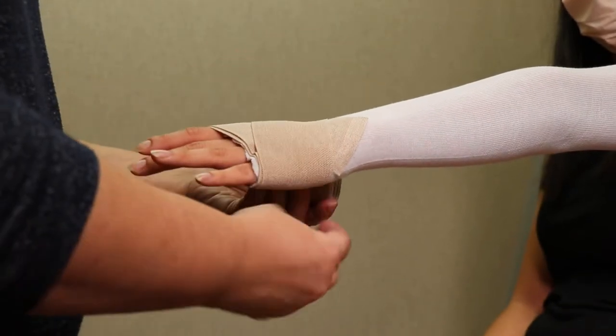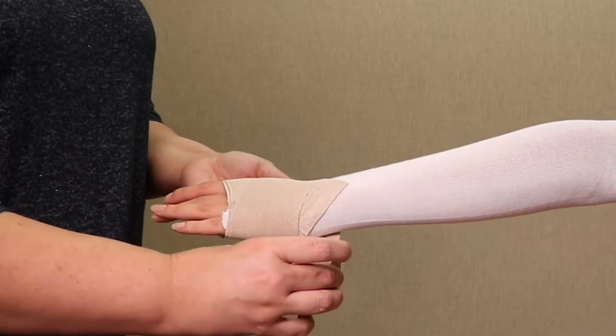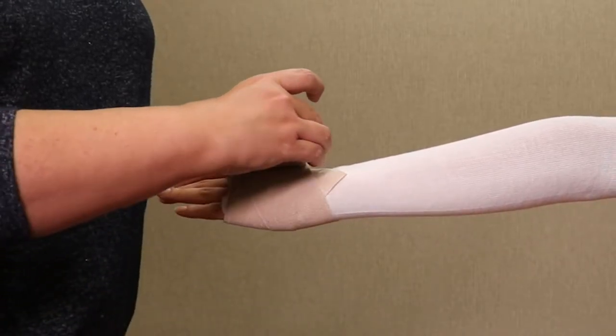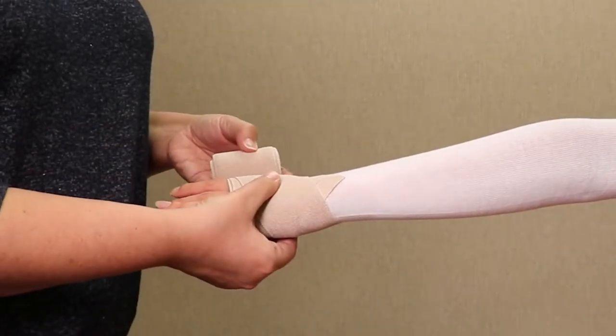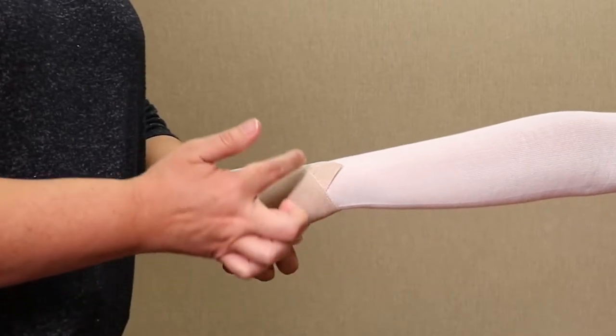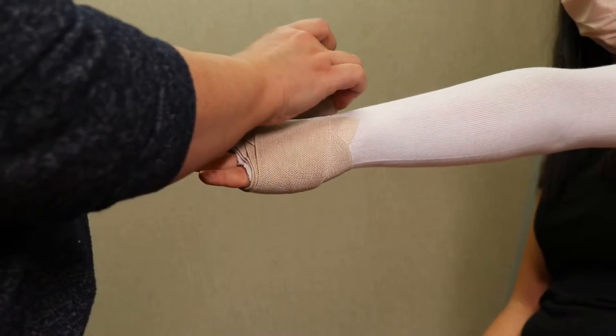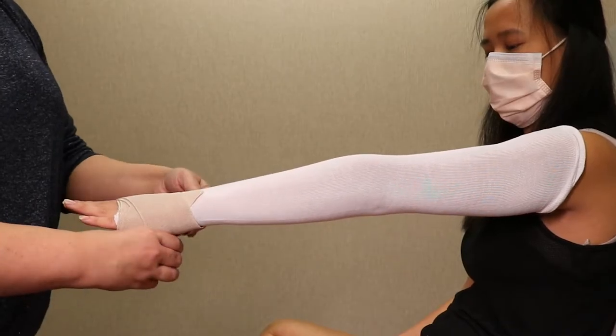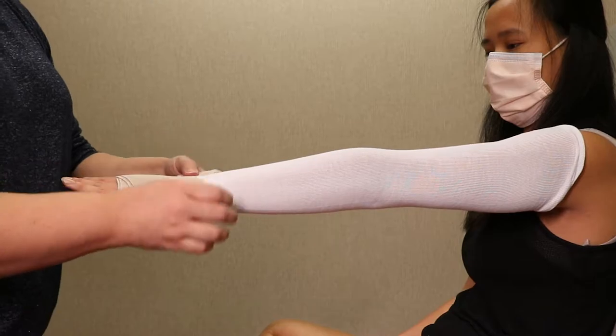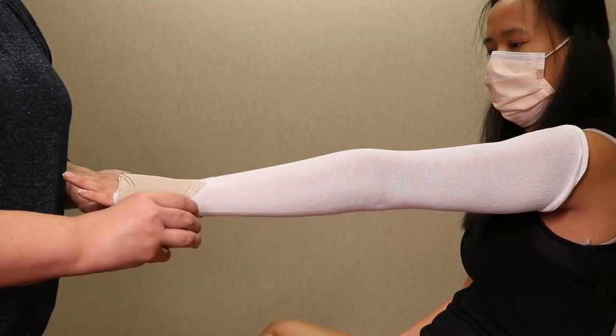On the fourth time, take the bandage under your thumb, then above your thumb, so that you've made an X on the back of your hand. Continue to make X's, as you and your therapist have discussed, or until you run out of bandage.